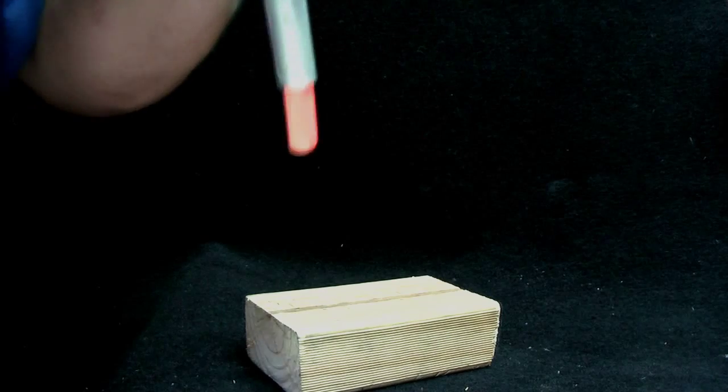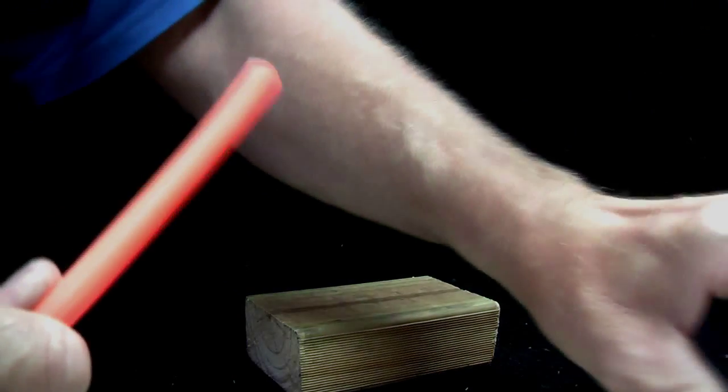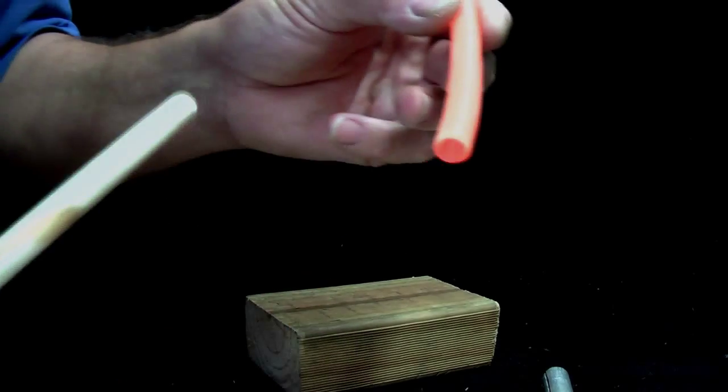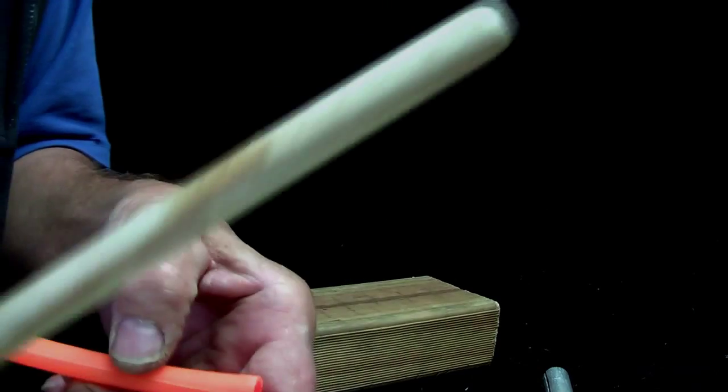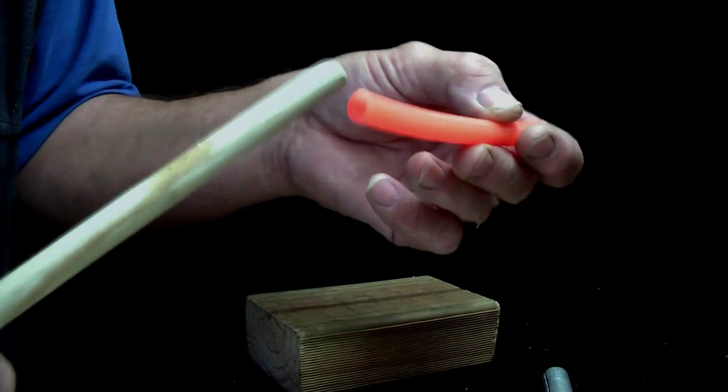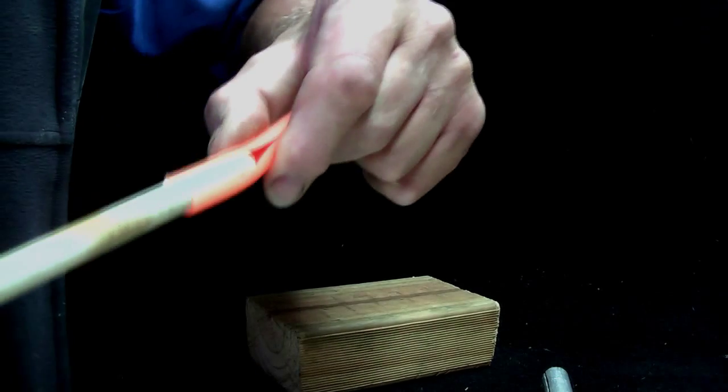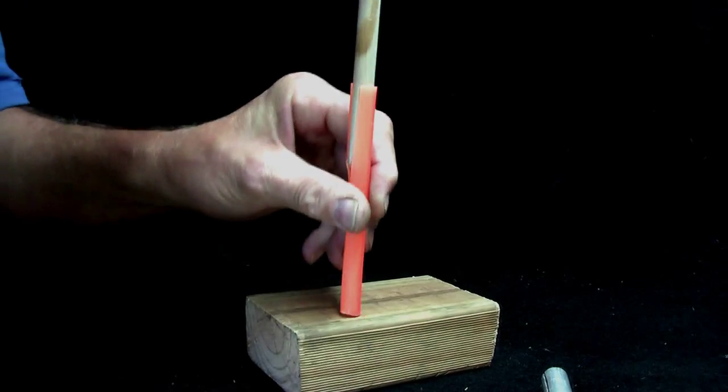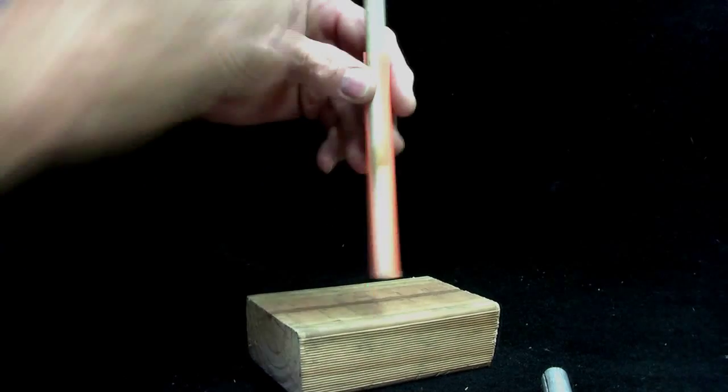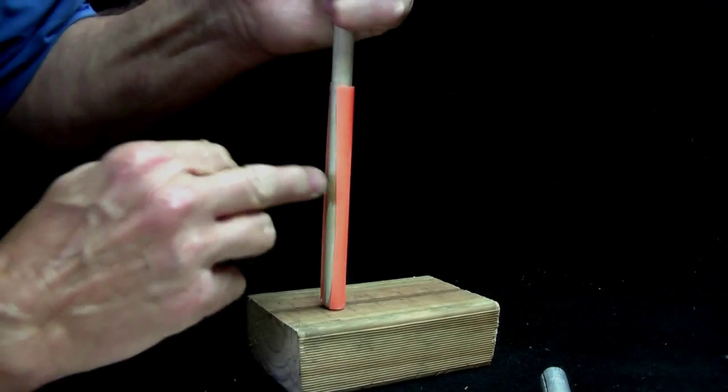So what I'll do now is get a wooden dowel, it's 12.5 millimeters, bit tapered on the end as you might see. What you do is you insert it in the tubing like this. As you can see, you push it right down, everything's pretty well straight on the other side as well.